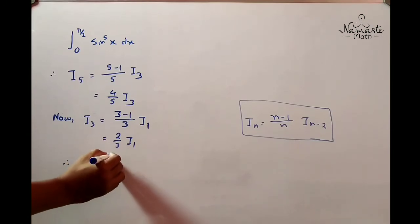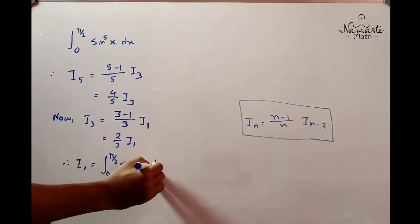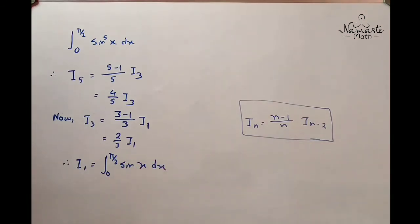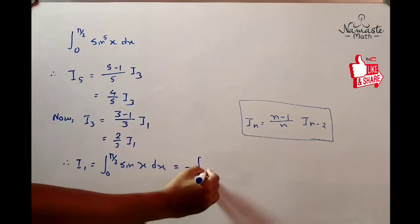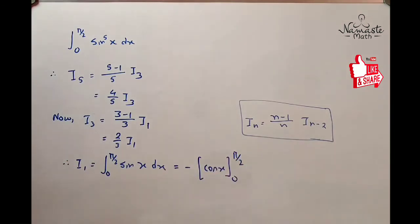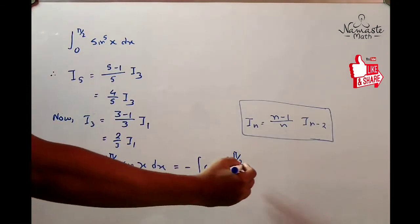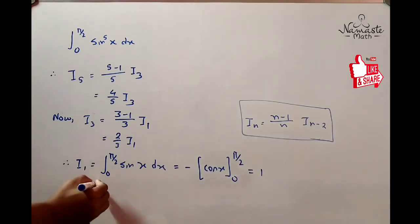Now you have to find the value of I1, which is integral 0 to π/2 of sin x dx. You can easily integrate this. After integrating you get -cos x evaluated from 0 to π/2, and the value will be 1. You just put the limits, upper limit minus lower limit, and we get I1 = 1.